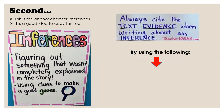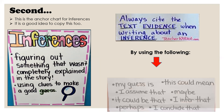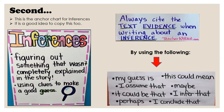When you make an inference and want to show how it's supported, you can use sentences like: 'My guess is...', 'This could mean...', 'I assume that...', 'Maybe it could be that...', 'I infer that...', 'Perhaps...', or 'I conclude that...' Basically, you're just telling what you're guessing from what you already know and what you read in the text.